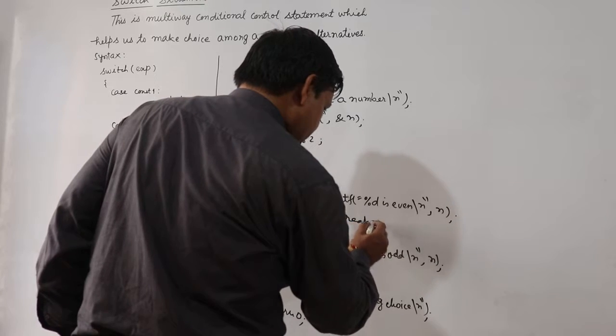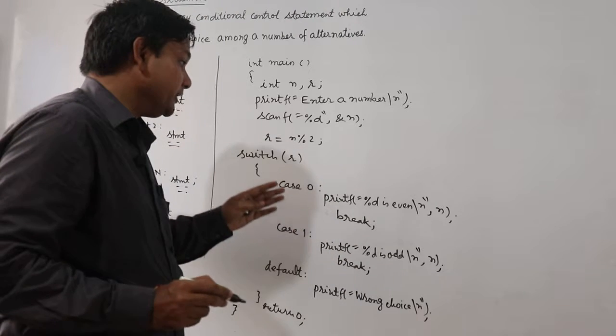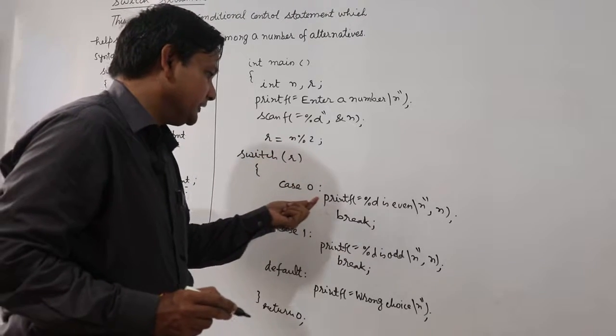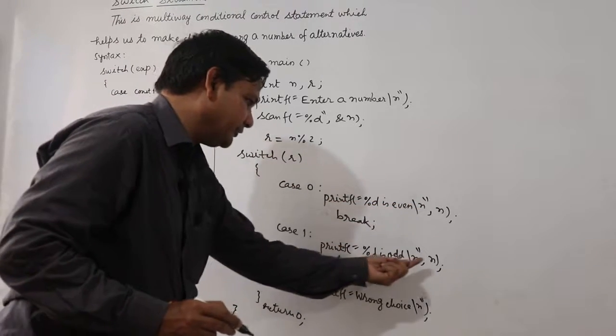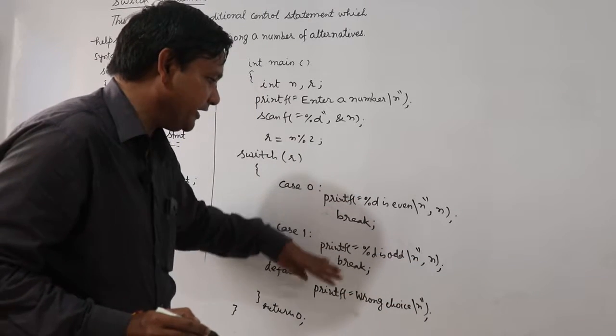Here also, if this case is encountered, it means it will be executed wrongly. If I would have used 10 here, then 10 is even, 10 is odd, wrong choice. Everything would be there, if I don't use break statements.